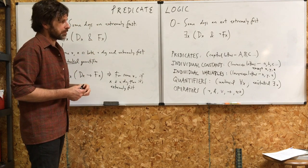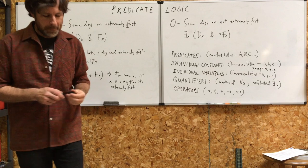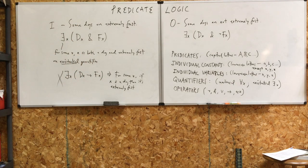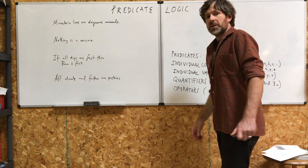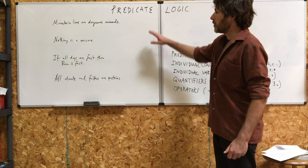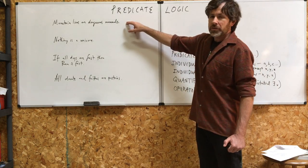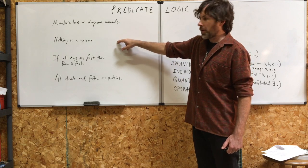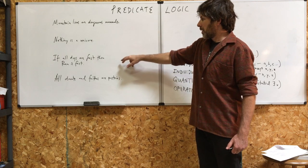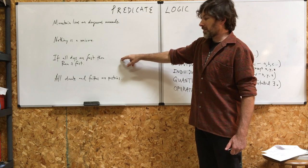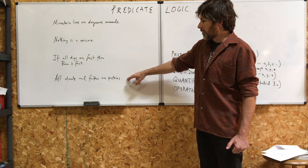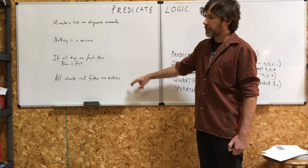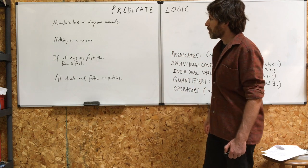Here are four statements to test you with: 'Mountain lions are dangerous mammals.' 'Nothing is a unicorn.' 'If all dogs are fast, then Ren is fast.' 'All donuts and fritters are pastries.'